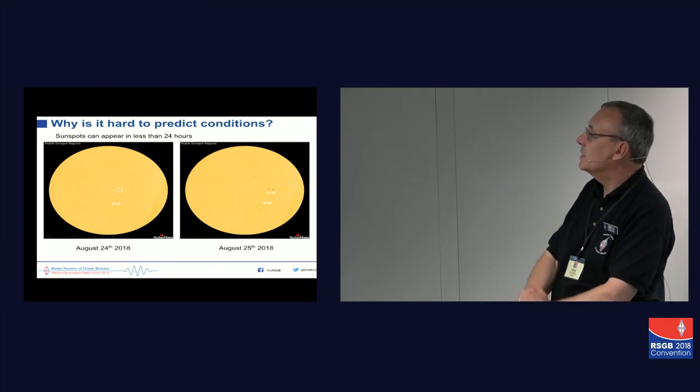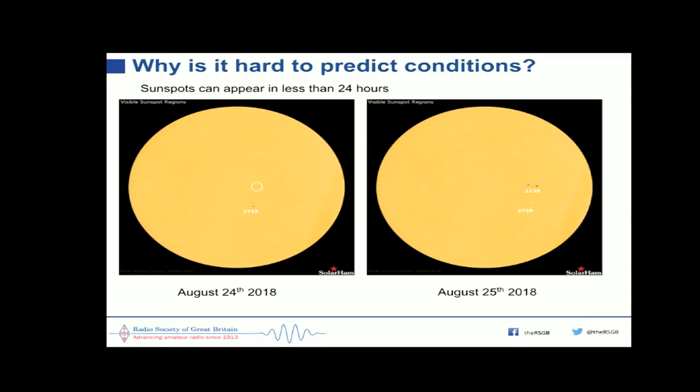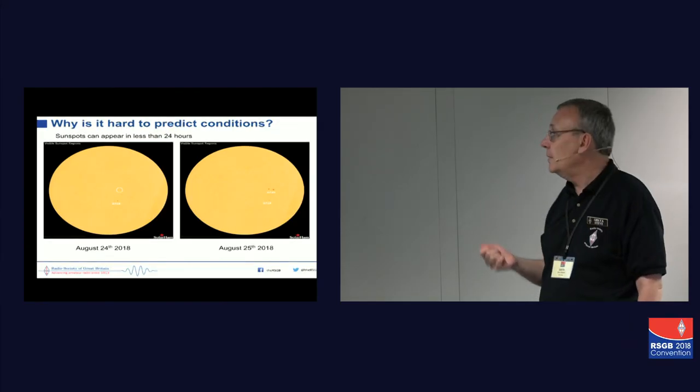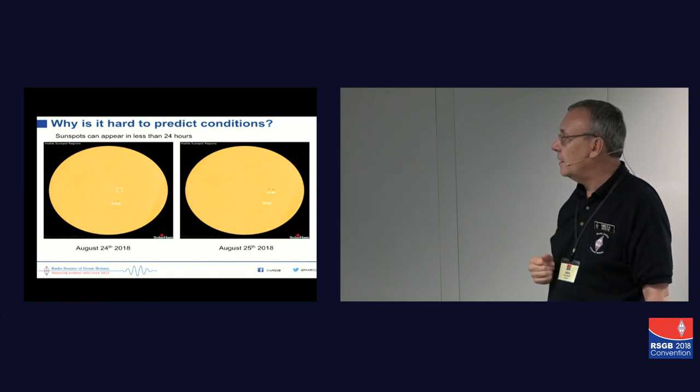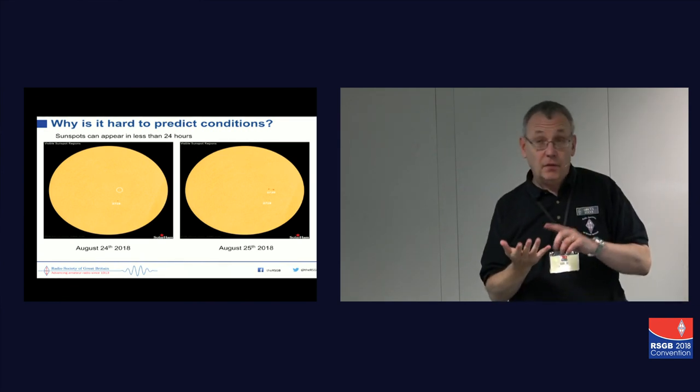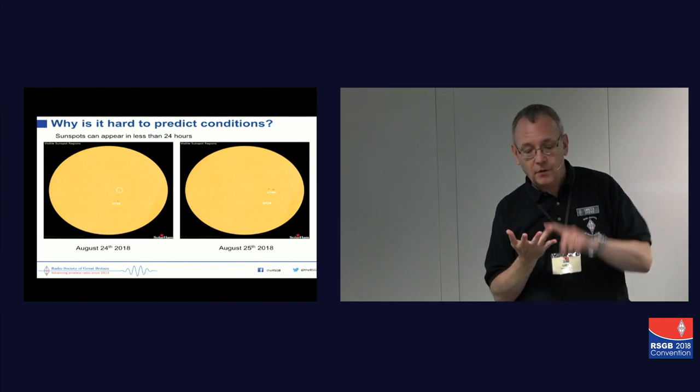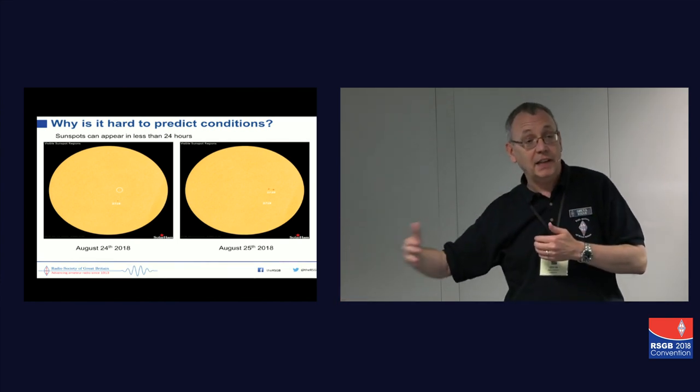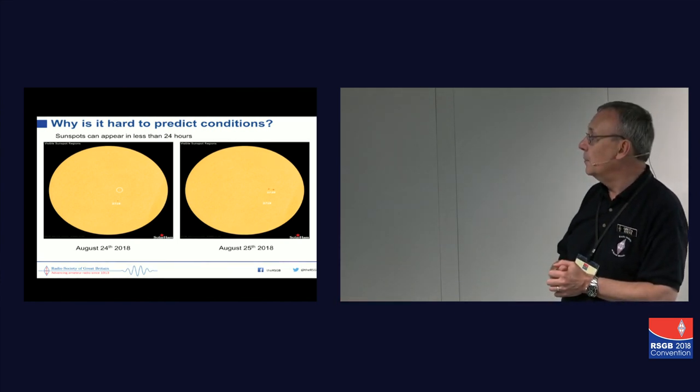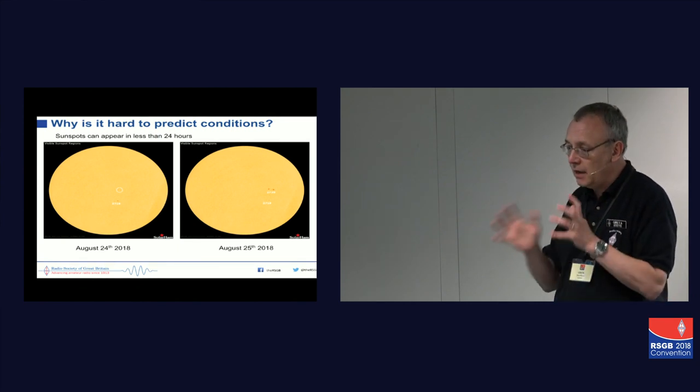So, why is it hard to predict conditions? A lot of it is because things change quite rapidly. On the left-hand side there is the sunspots as they were on August the 24th, and as you can see, there's basically just two tiny, tiny dots. 24 hours later, that sunspot, the highest sunspot, which is number 2720 there, has actually developed an awful lot. So, in 24 hours, we've gone from a dot to quite a large sunspot group, and the number's gone up. Now, imagine that I'm trying to write this on Thursday, so it goes out with the RSGB on Friday, it's then read out on Sunday, and that's got to actually tell you what's going on for the next seven days. That's really, really hard to do. And I think that's one of the problems, that it's very hard to predict ahead.